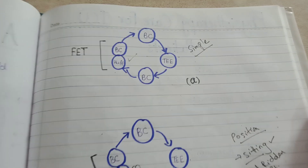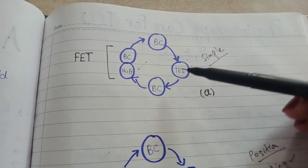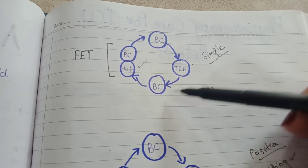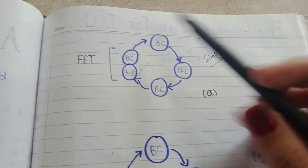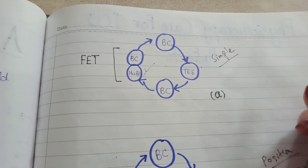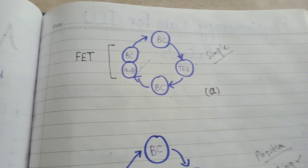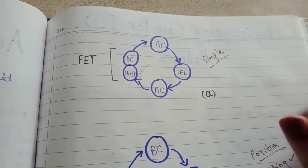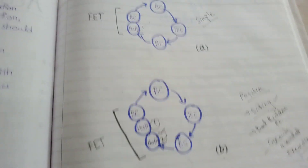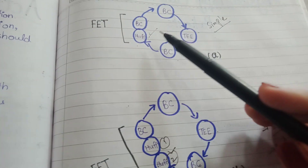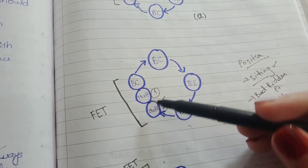This is the cycle of the Active Cycle of Breathing Technique: breathing control, then thoracic expansion exercises, then breathing control, then forced expiration technique which includes one huff, then breathing control again. This is the simple cycle used for severe patients. As the patient masters the simple cycle, we move toward more complex cycles. The only difference is that the simple cycle contains one huff, the next level contains two huffs, and the more complex cycle contains three huffs.